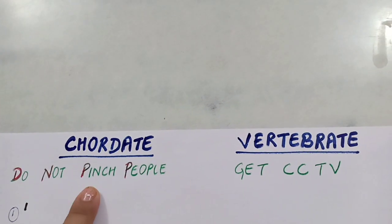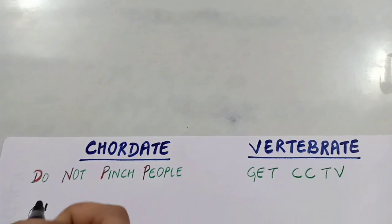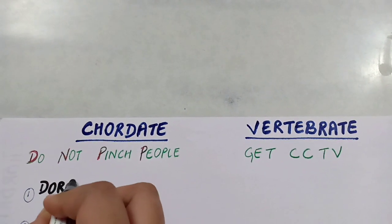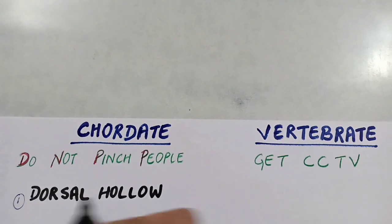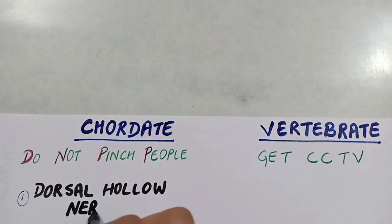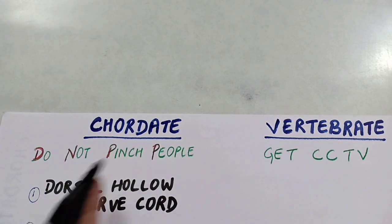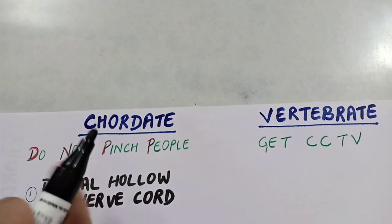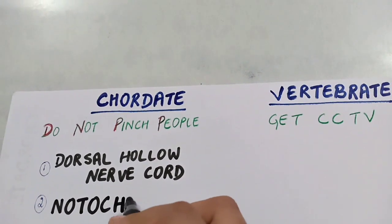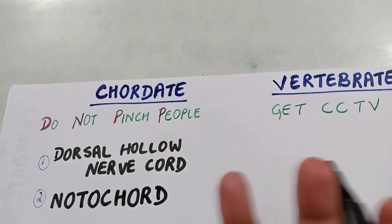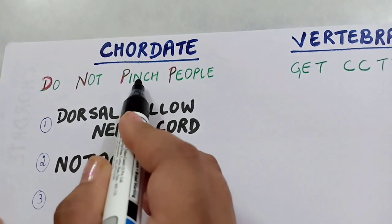The shortcut for chordates is 'Do Not Pinch People.' With the first word 'Do,' we remember that all chordates have a dorsal hollow nerve chord. 'Not' tells us that all chordates have a notochord during any stage of their development.